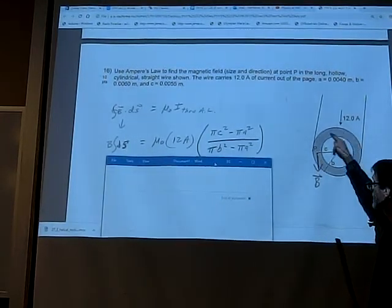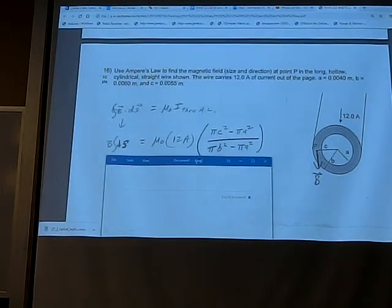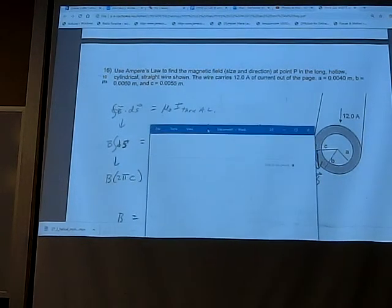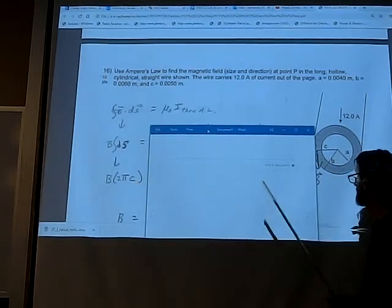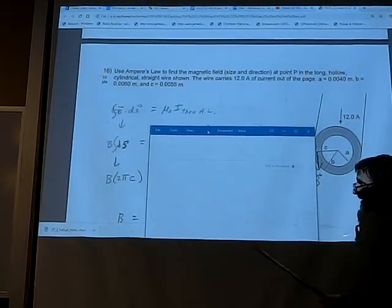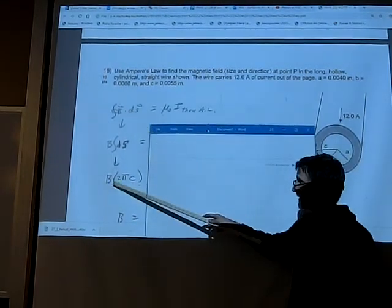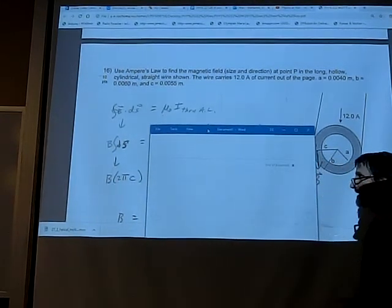Integral ds is of course just the length around your imaginary circle, which in this case has a radius c. So we could continue on the left side by saying integral ds is just 2πc, or again c is the radius of your imaginary circle. So we've reduced the integral to just the magnetic field times the length around some imaginary loop. So that's nice and easy.